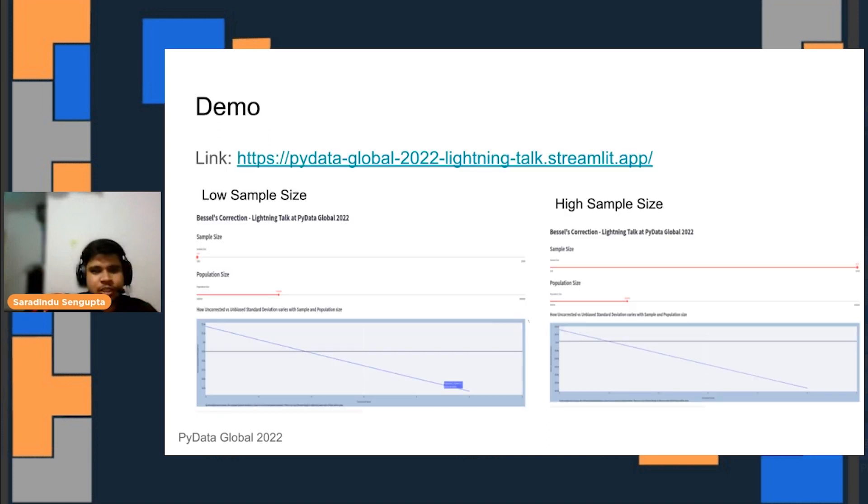To see how much correction factor is needed, there's a simple app hosted at Streamlit. Two simple screenshots are presented here with low sample size and high sample size with the same population size. You can see that the deviation between the correction factor for low sample size and high sample size is quite big.